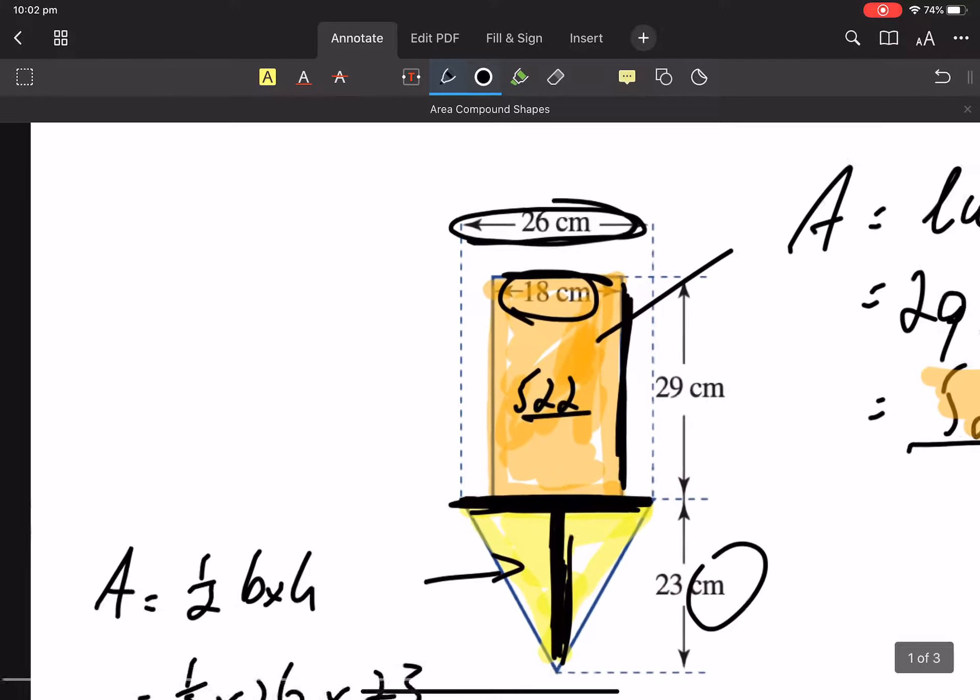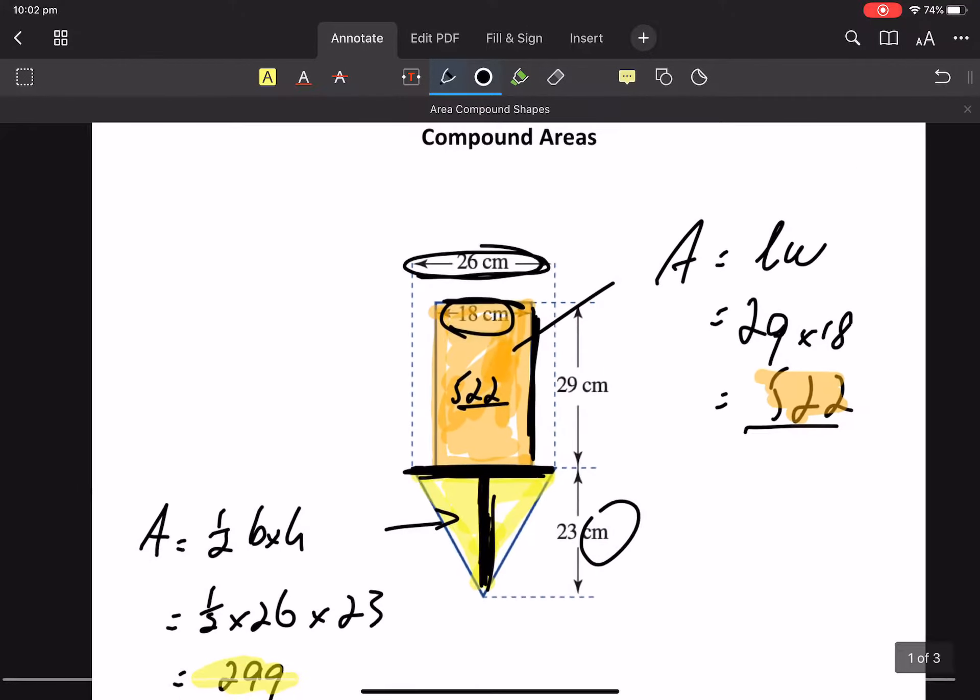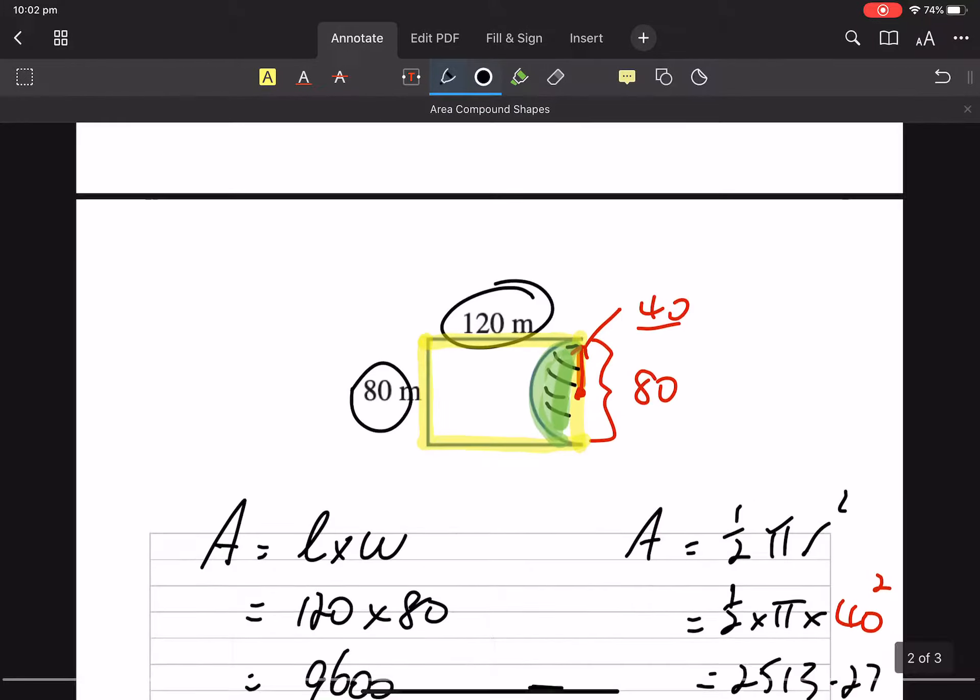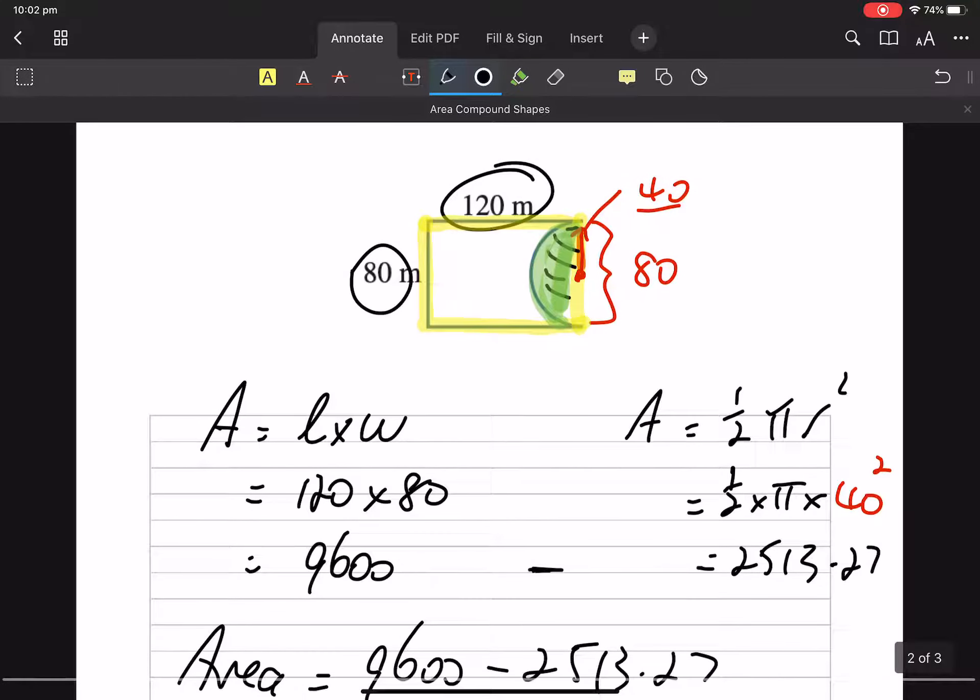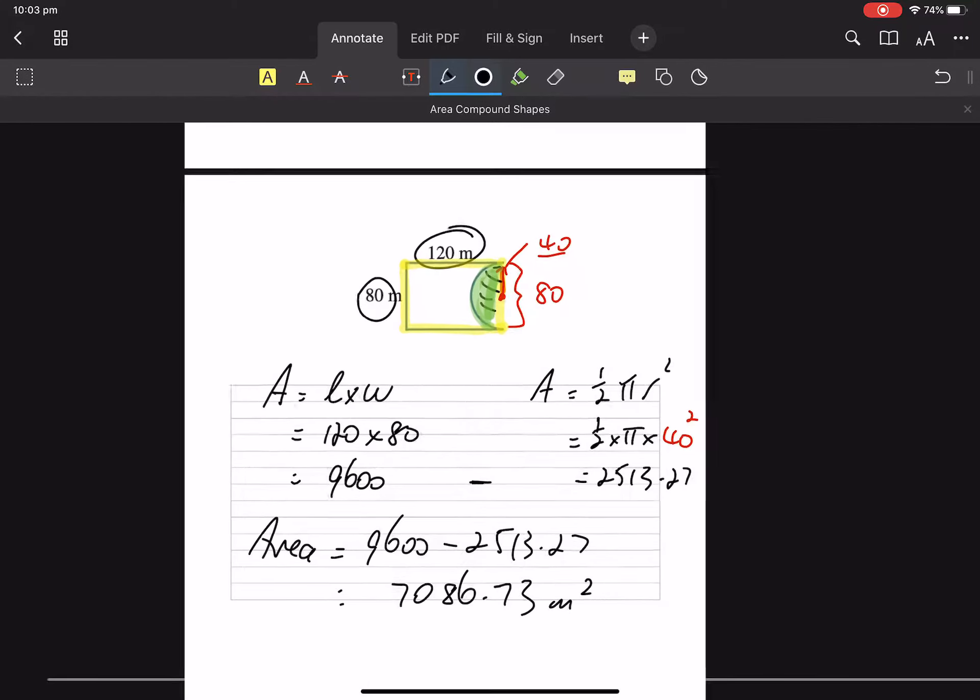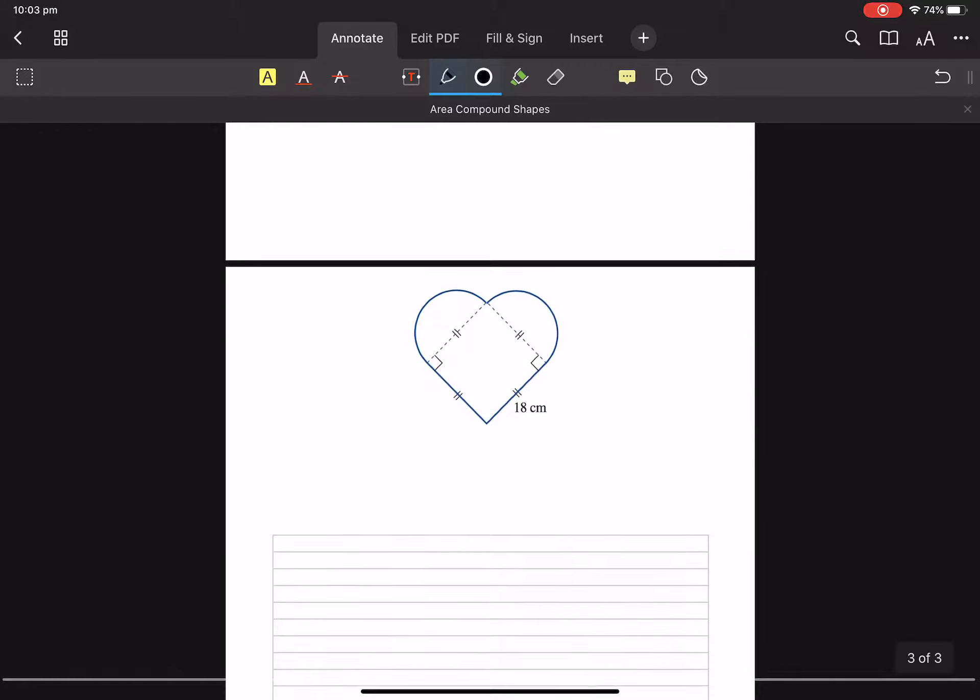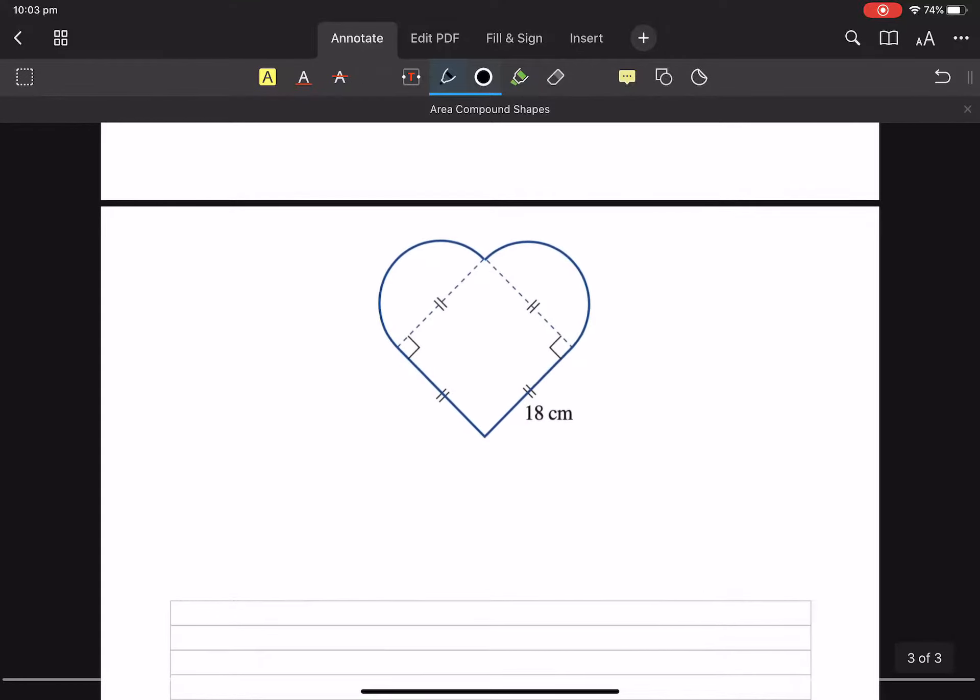So the previous question was two different shapes added together. This one was two different shapes and I had to subtract one from the other. So compound events are either adding separate shapes or subtracting. Let's just do this one really quickly.